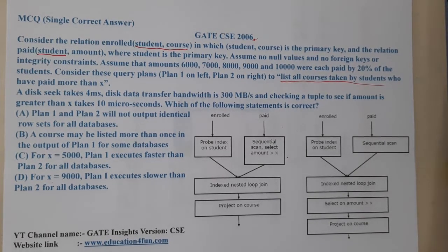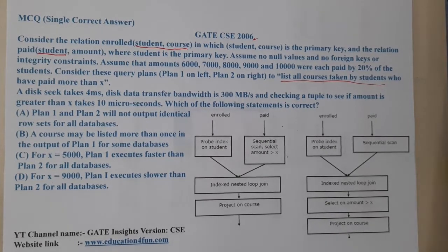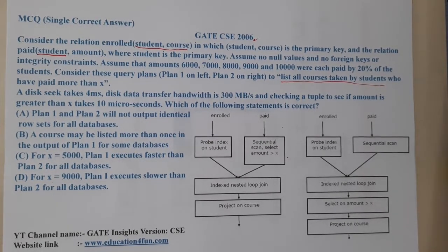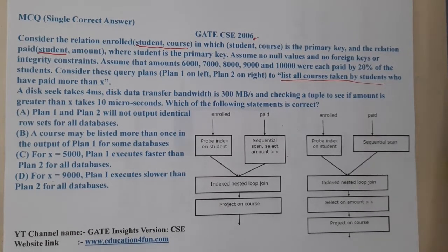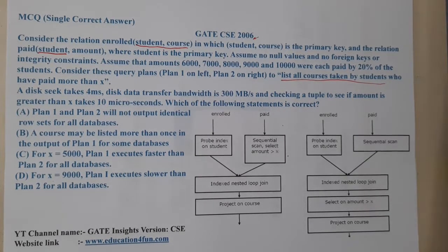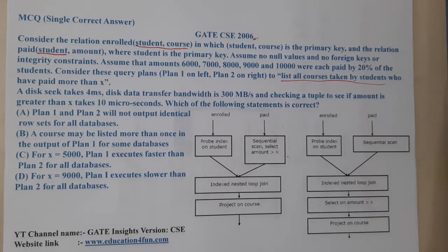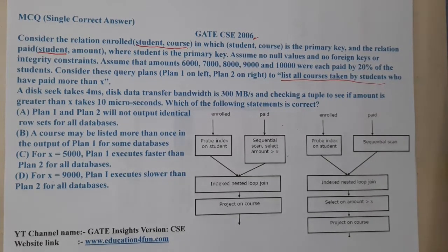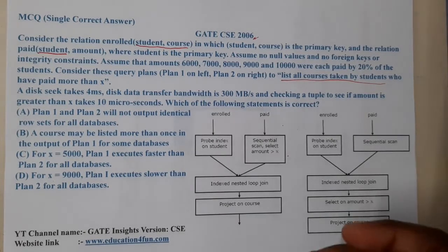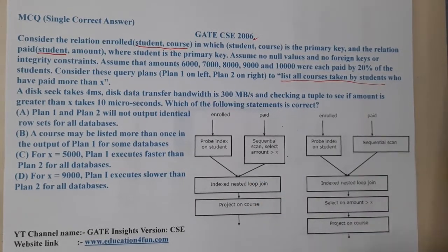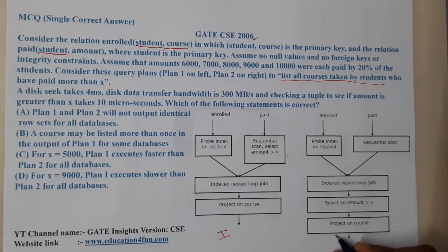Option A says Plan 1 and Plan 2 will not output identical rows. Option B says a course may be listed more than once in Plan 1's output. Option C says for x = 5000, Plan 1 executes faster than Plan 2 for all databases; for x = 9000, Plan 1 executes slower than Plan 2. The whole scenario is essentially asking which plan is better.